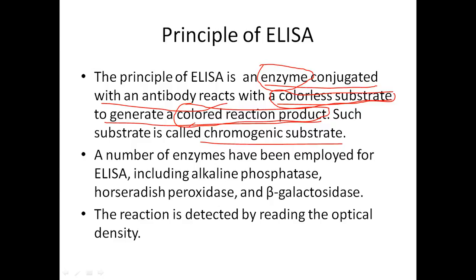A number of enzymes have been employed for ELISA. The commonly used ones are horseradish peroxidase and beta-galactosidase, as well as alkaline phosphatase. The overall purpose of these enzymes is to change the colorless substrate into a colored reaction product. The intensity of the color is determined by a spectrophotometer or ELISA reader, and this indicates the concentration of the antigen or antibody.